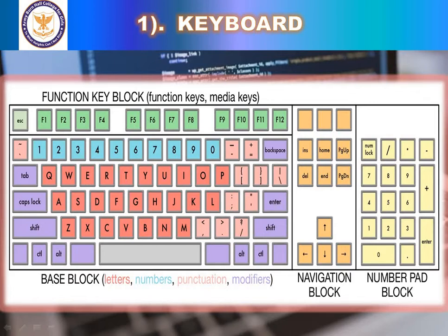There are also function keys on the keyboard — the keys on the top row labeled with the letter F. These are called function keys, from F1 to F12. They are special keys that perform special functions, and their functions depend on the software being used on the computer.